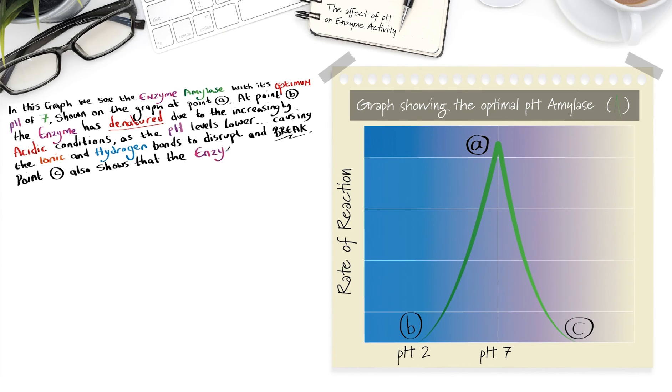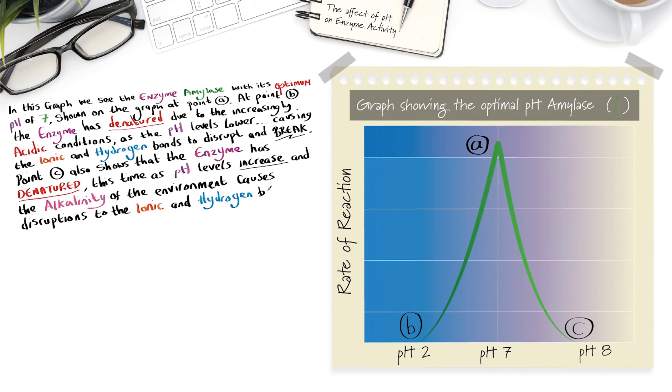Point C also shows that the enzyme is denatured, this time as pH levels increase and the alkalinity of the environment causes disruptions to the ionic and hydrogen bonds holding the tertiary structure of the enzyme together.